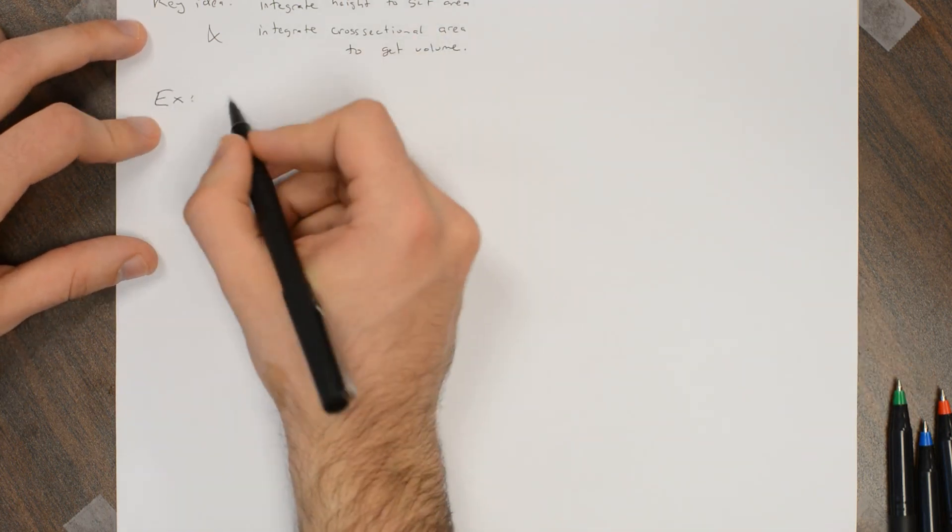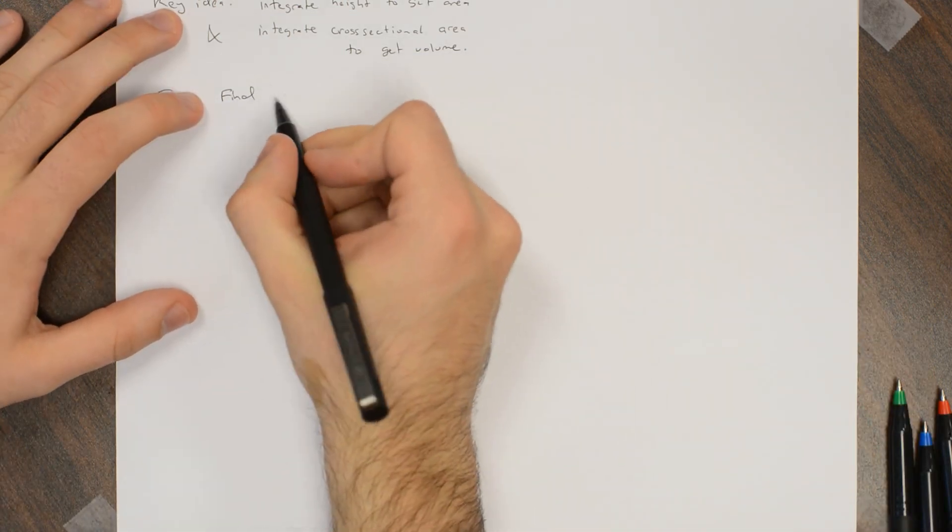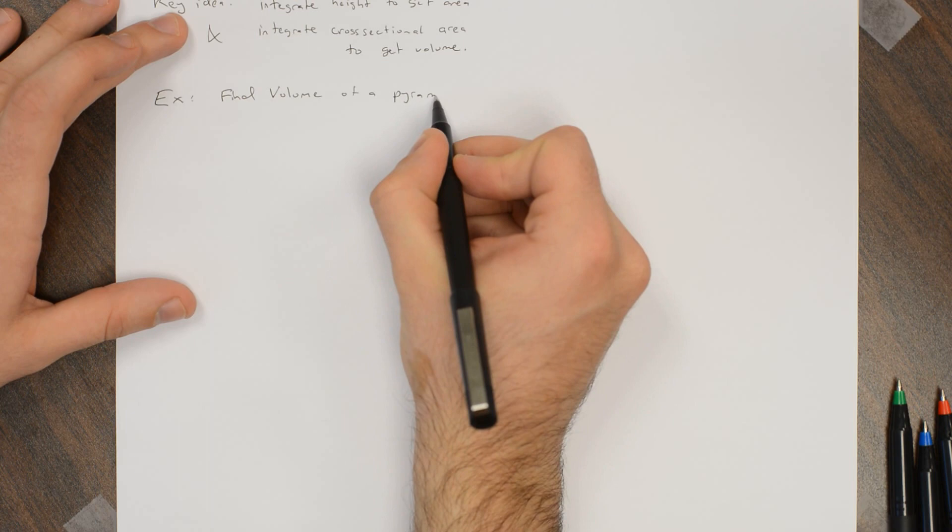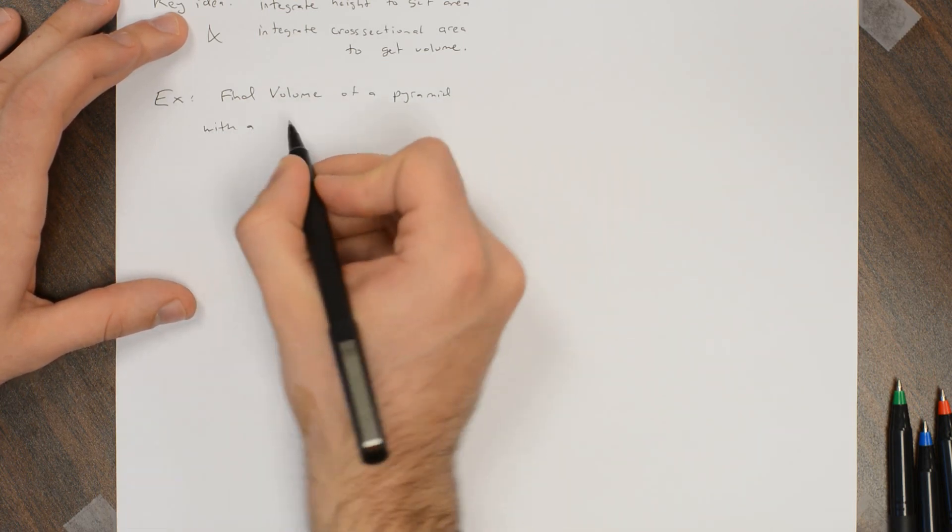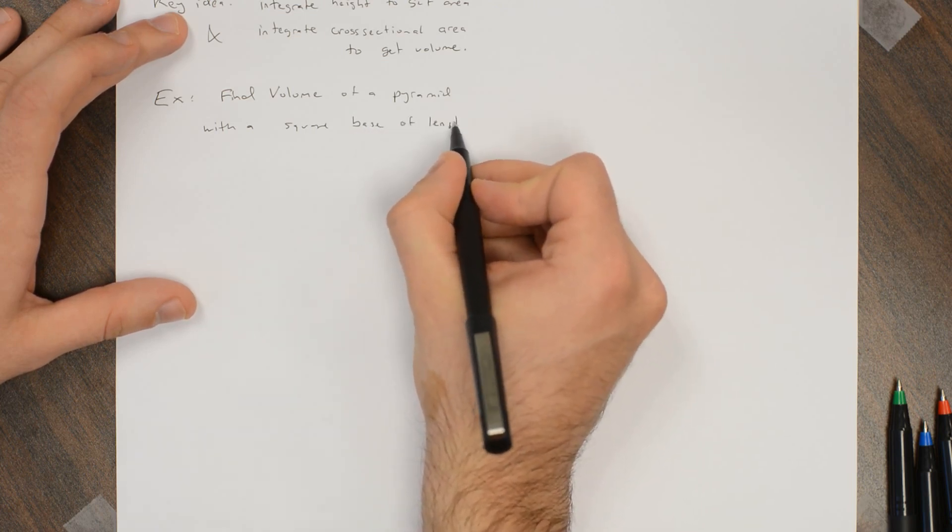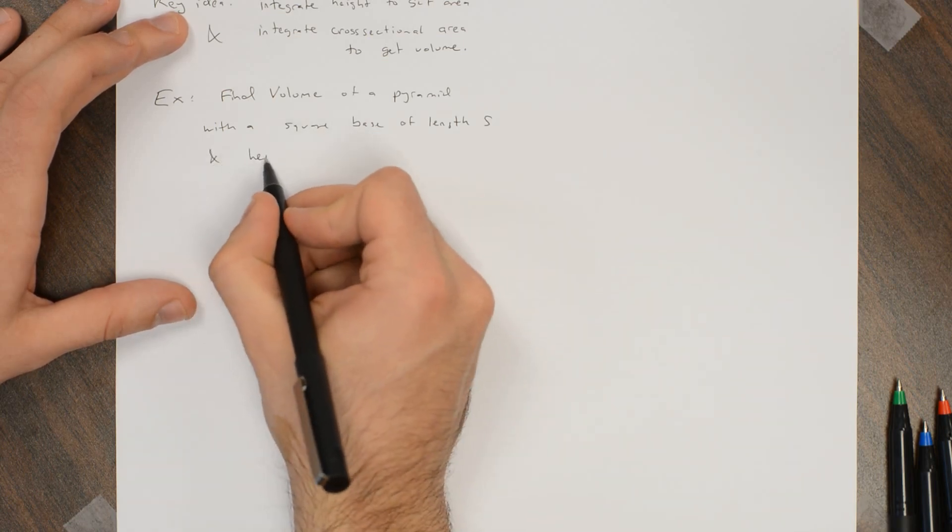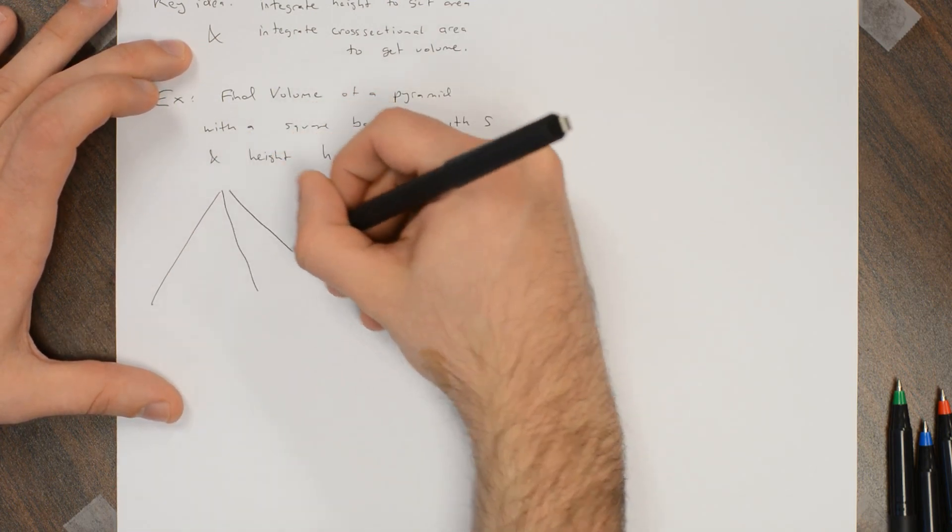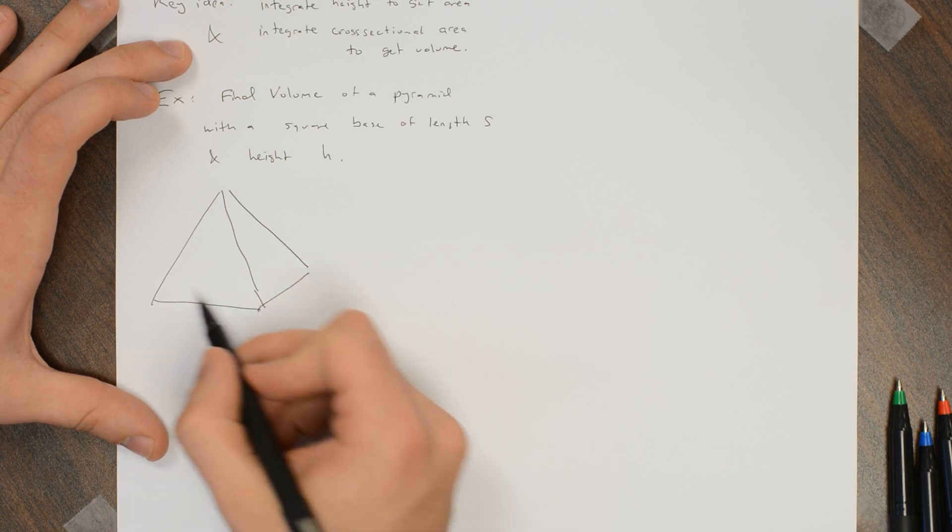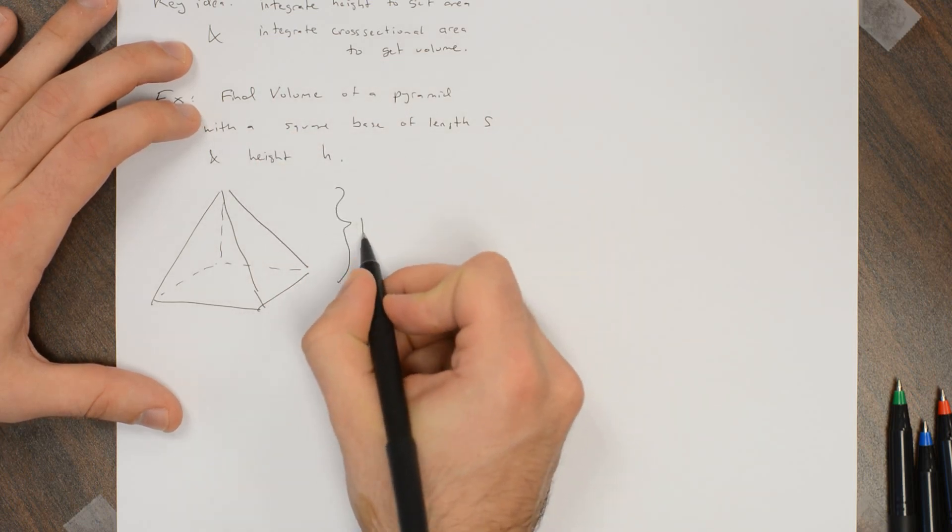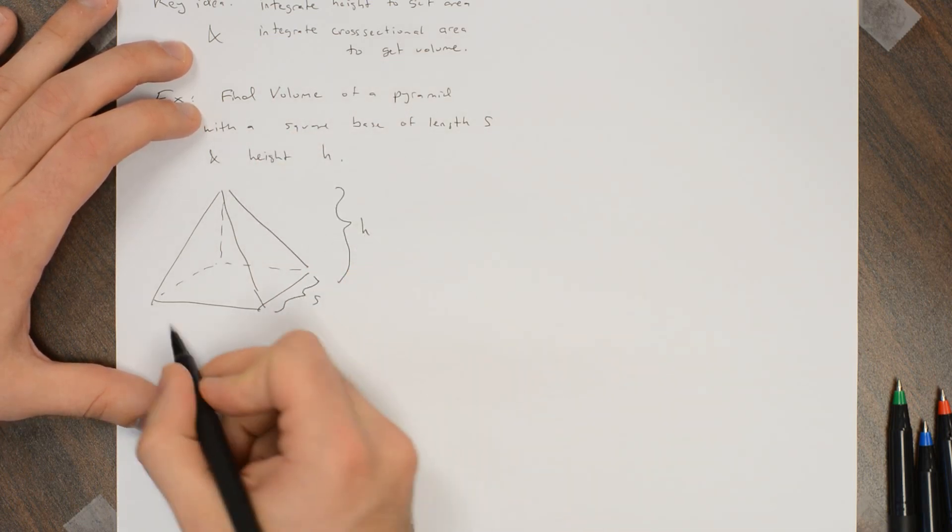So here's a fun example. Maybe you want to know how much stone there is in the Pyramid of Giza or something. We want to find the volume of a pyramid with a square base of length s and a height h. So we have this pyramid with a square base, and the height of the pyramid is h, and the length of these base sides is s.